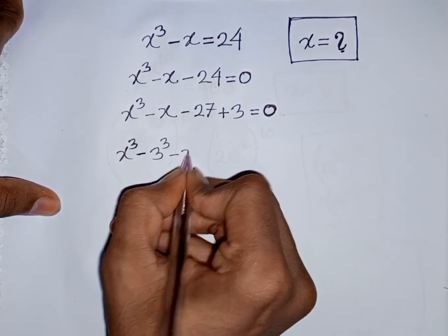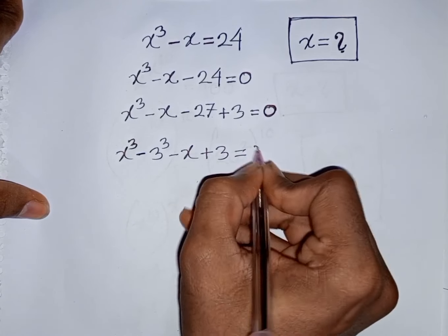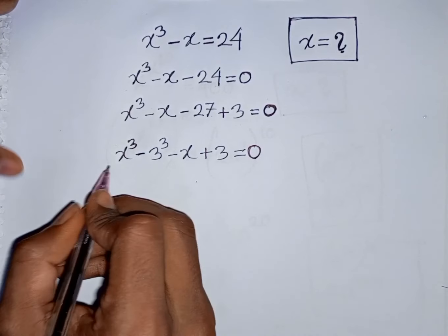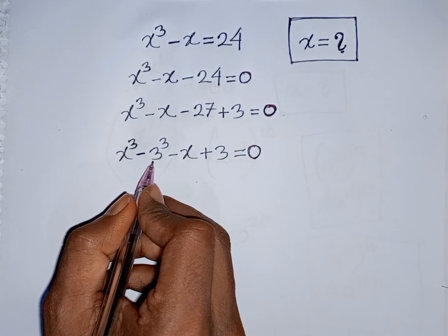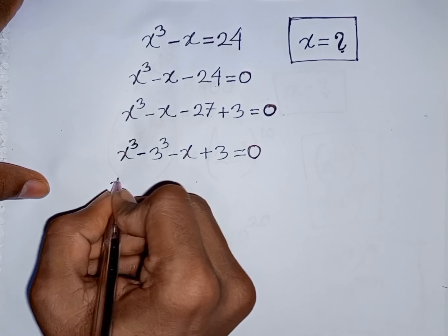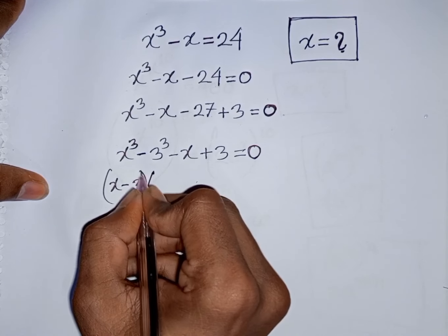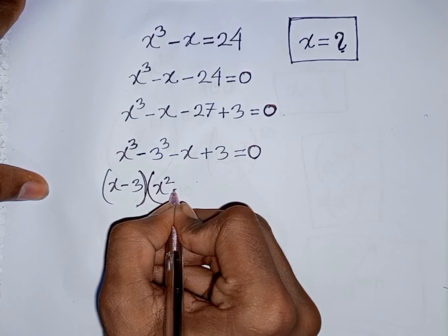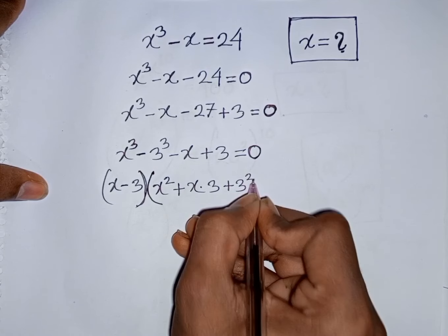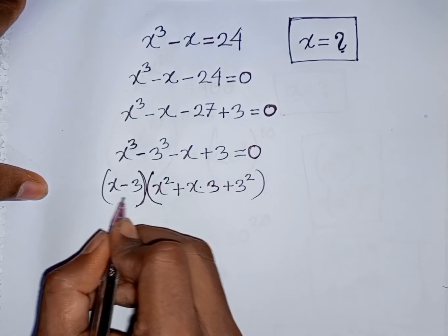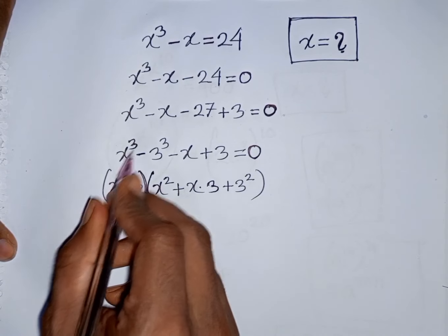Then minus x plus 3 is equal to 0. Now, here you can apply the formula of a cube minus b cube. Here, a is x and b is 3. So, according to the formula, you can write x minus 3 times x square plus x times 3 plus 3 square. That means, a minus b times a square plus ab plus b square — this is the formula of a cube minus b cube.